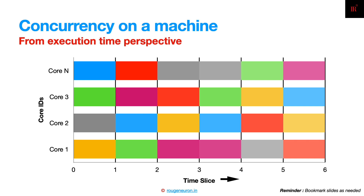Those threads will be scheduled on different cores as well. It is not guaranteed that the same thread will always run on the same core. That is one of the external factors that can affect the performance of your code.